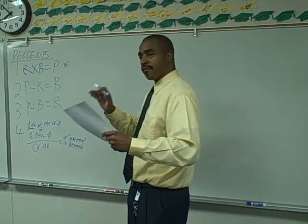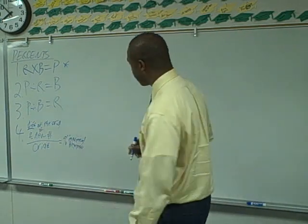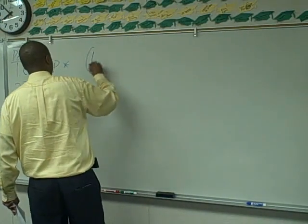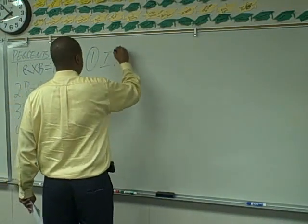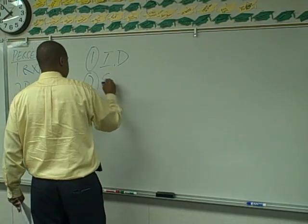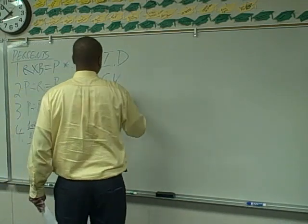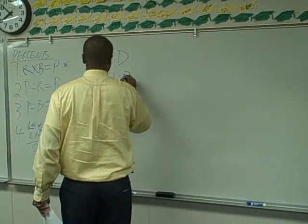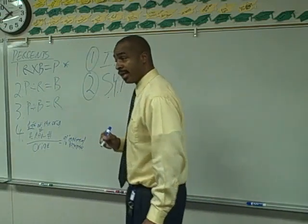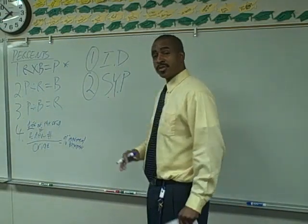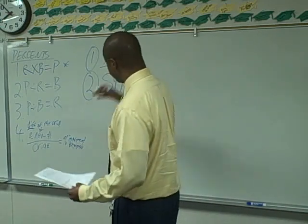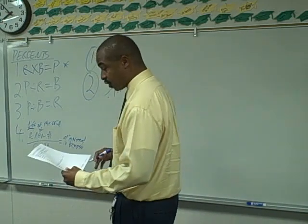So what are the first two things we have to do before every word problem? Number one: identify. What's the second thing we do? State your path. Identify the question — simply saying what is the question we're being asked. State your path — with the information we've been given, how do we get back to that answer?